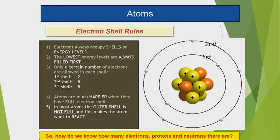Electron shells and shell rules: Electrons always occupy shells or energy levels. The lowest energy levels are always filled first. Only a certain number of electrons are allowed in each shell — the first shell holds 2 electrons, the second shell holds 8 electrons. Atoms are happiest when they have filled electron shells; in most atoms the outer shell is not full, which makes the atom want to react.